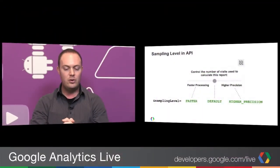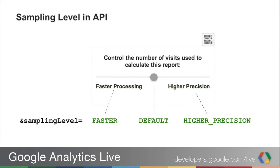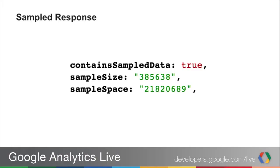If you use this query parameter, you'll see the response from the Core Reporting API includes a couple of new parameters. The response now includes these different properties. One is contains sampled data — this lets you know whether the response contained sampled data or not. This has always been there. But what is new is we've added two additional properties to give you more information about the sampling that took place.